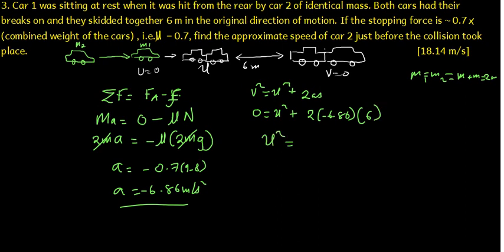and then the distance they covered is 6. So that will give us u squared is equal to 2 multiplied by 6.86 multiplied by 6, that would be 82.32. It's going to be positive because this value is negative. When it goes to the other side becomes positive. And then to find u we are going to square root both sides. That is going to give us about 9.073 meters per second.